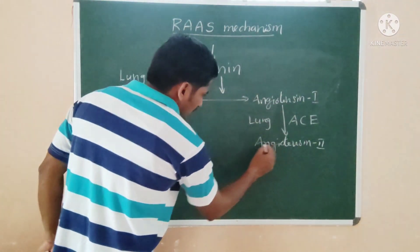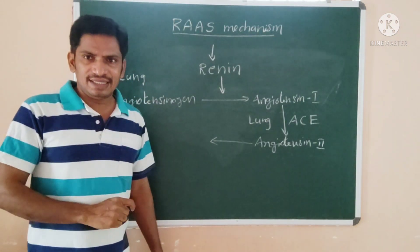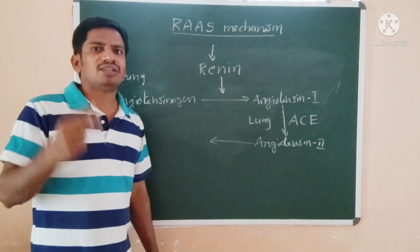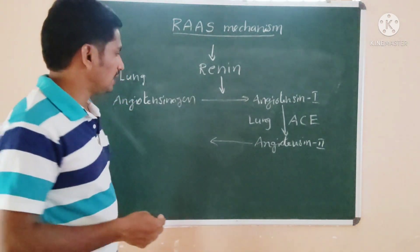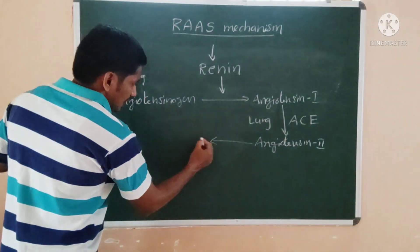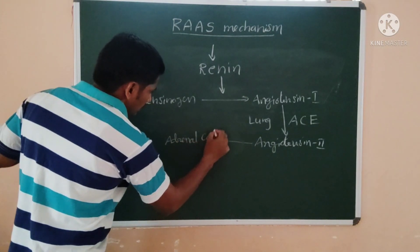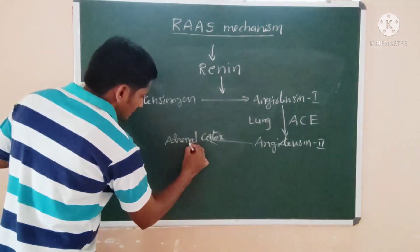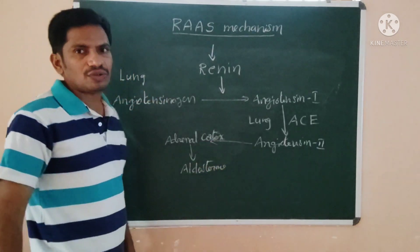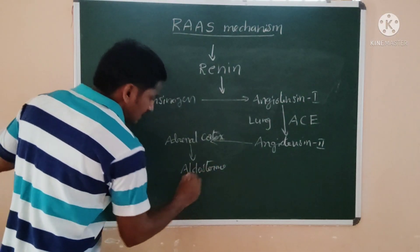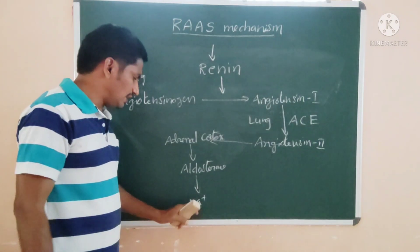Angiotensin 2 acts on the adrenal cortex region — specifically on the zona glomerulosa — and causes it to release aldosterone. The adrenal cortex secretes aldosterone, and this aldosterone helps to regulate the sodium level in the blood. This solves the first problem of decreased sodium, by promoting sodium reabsorption.